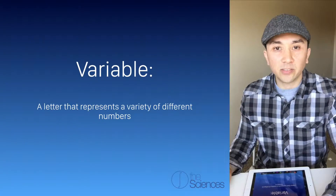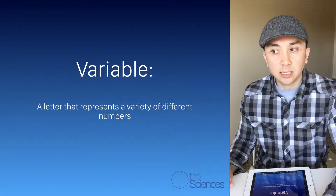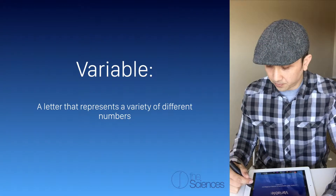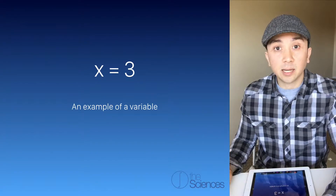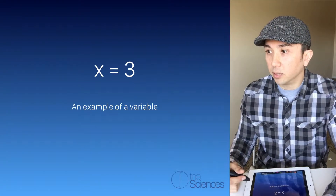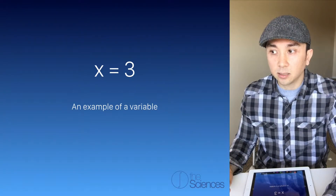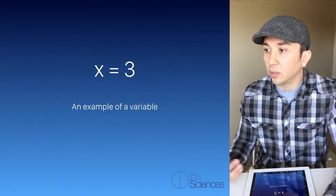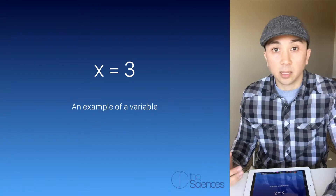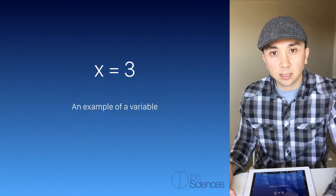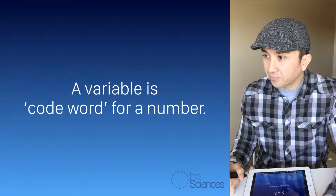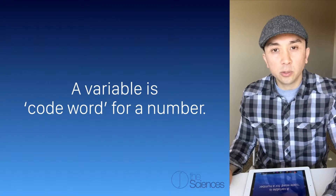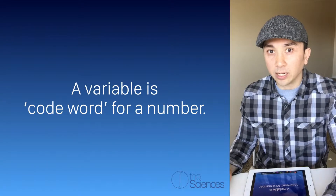So what is a variable? A variable is a letter that represents a variety of different numbers. Here is an example of a variable. The variable x is equal to the number 3, which means that the letter x represents the number 3. Another way you can think of this is that a variable is a code word for a number.